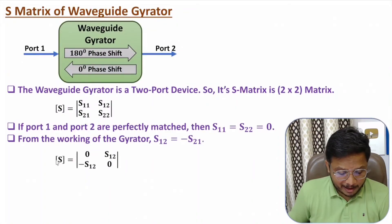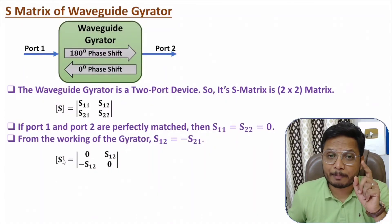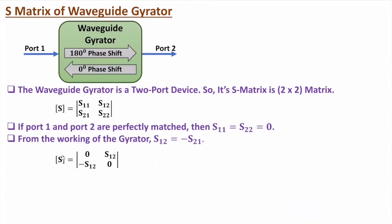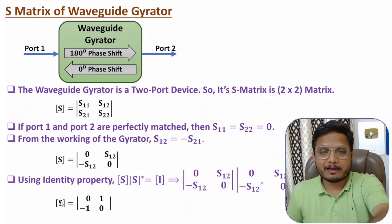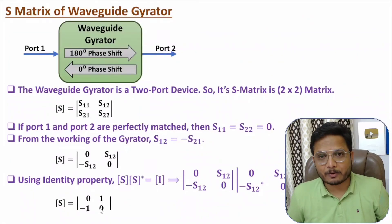To solve this S-matrix, I apply the unitary property: the S-matrix multiplied by its conjugate equals the identity matrix. Multiplying the first row by the first column gives S12 squared equals 1, so S12 equals 1. With S12 equals 1, the S-matrix of the gyrator becomes: [0, 1; −1, 0].